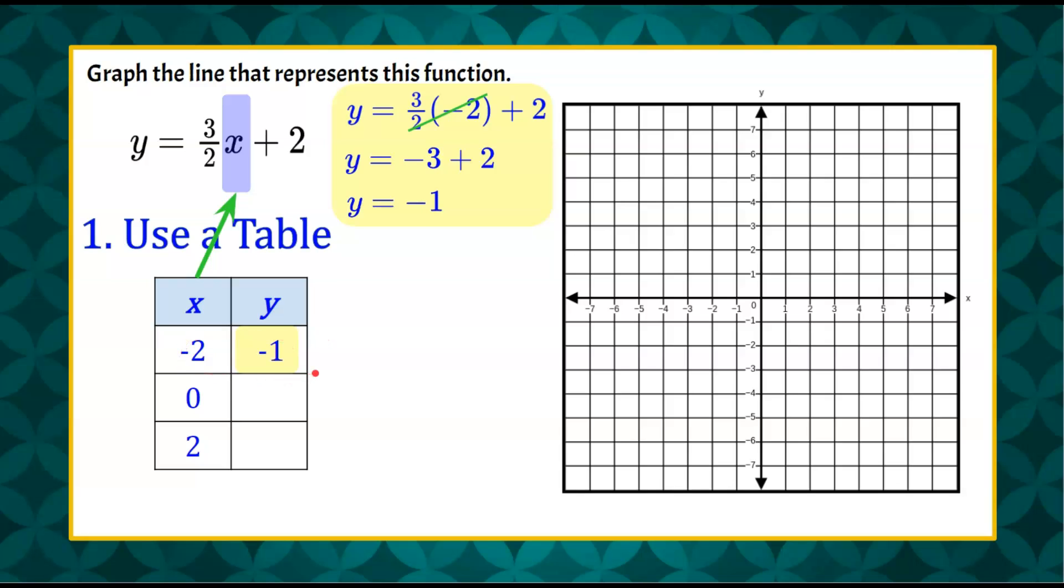That is an ordered pair. We can graph that. Negative 2, negative 1. Plot your point. Now we're going to go find another point.